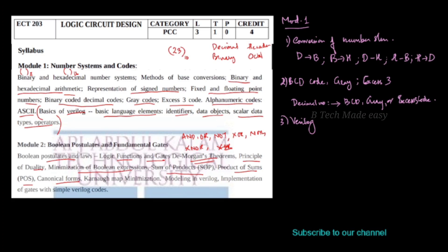We need to minimize Boolean expressions. A type of minimization technique is Karnaugh Map (K-Map) minimization. K-Map can be used to minimize Boolean expressions. That is what we will discuss in the second module.